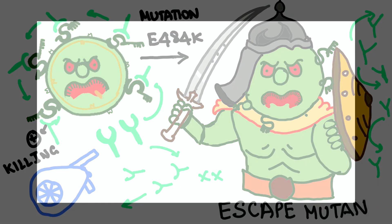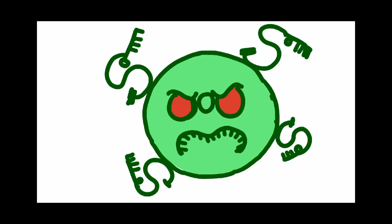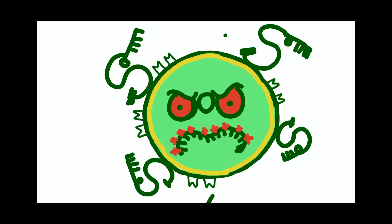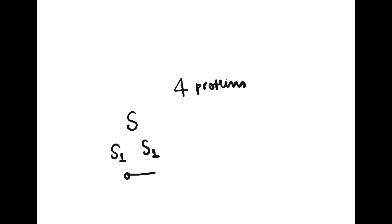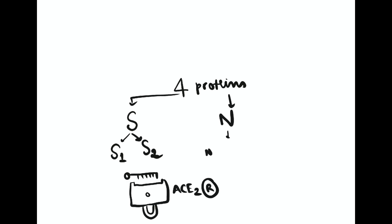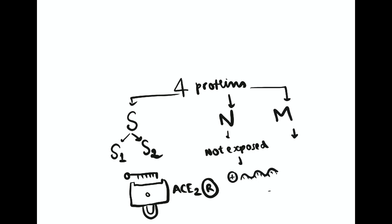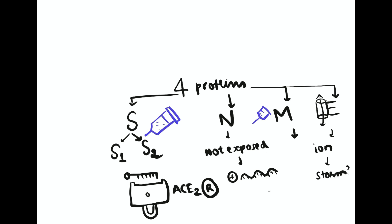Coronavirus is a single-stranded positive-sense RNA virus with multiple proteins on its surface, mainly the S proteins. S proteins are the keys of the coronavirus which unlock the lock — the ACE2 receptor present in human epithelial cells. This S protein region is the focus of interest for vaccines as well as for viral mutations.